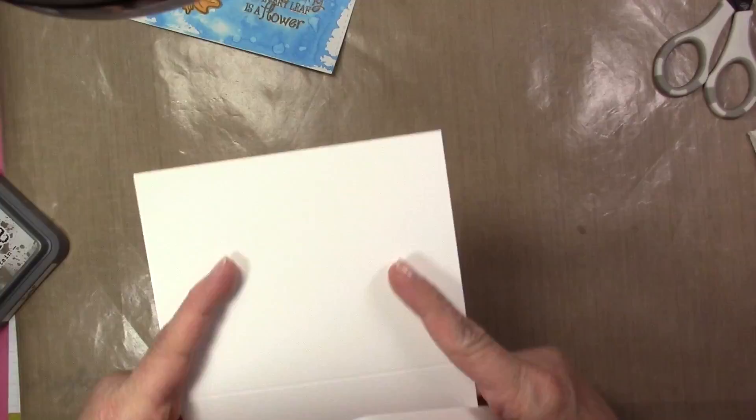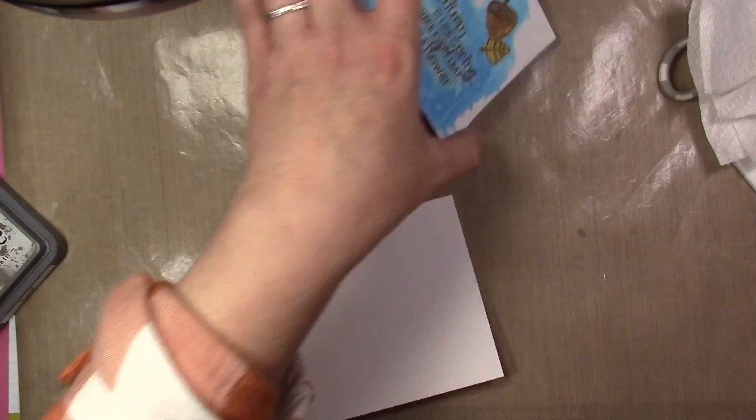I went ahead and created a 110-pound white card base, and I'm just going to adhere the panel to the top of that directly with some tape adhesive. You want to make sure you cover the panel very well with your tape because it warps a little bit with doing all the heating of the embossing back and forth.